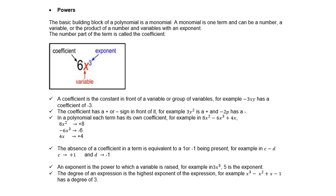In a polynomial, each term has its own coefficient. For example, in 8x² - 6x³ + 4x, the first coefficient is 8, the next one is -6, and then 4.